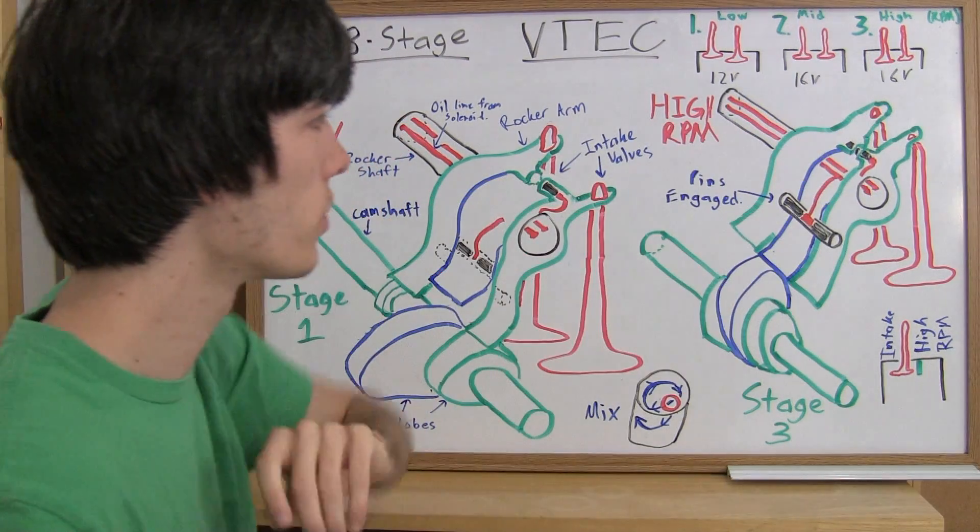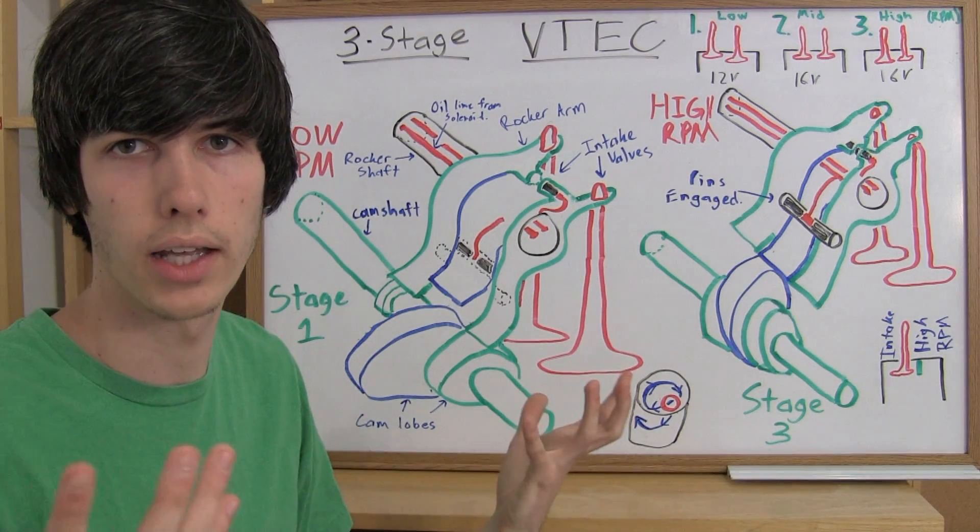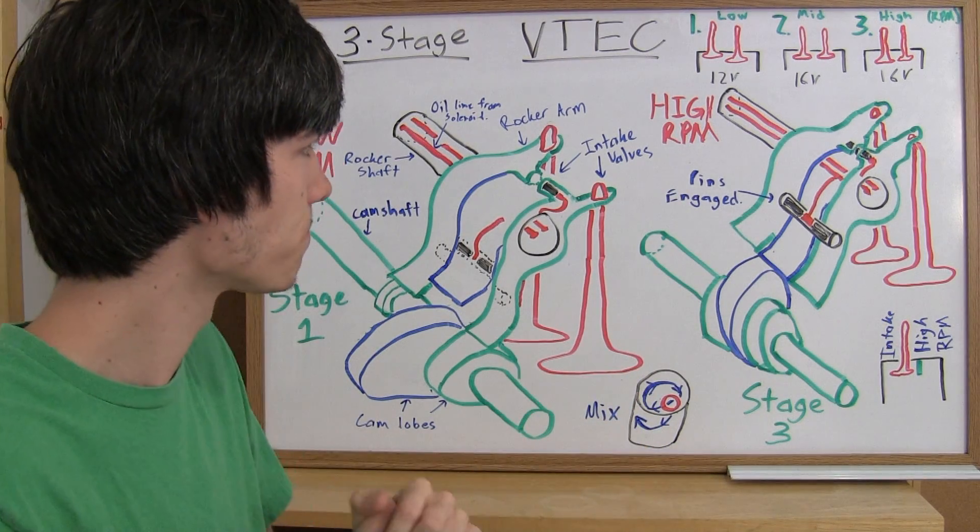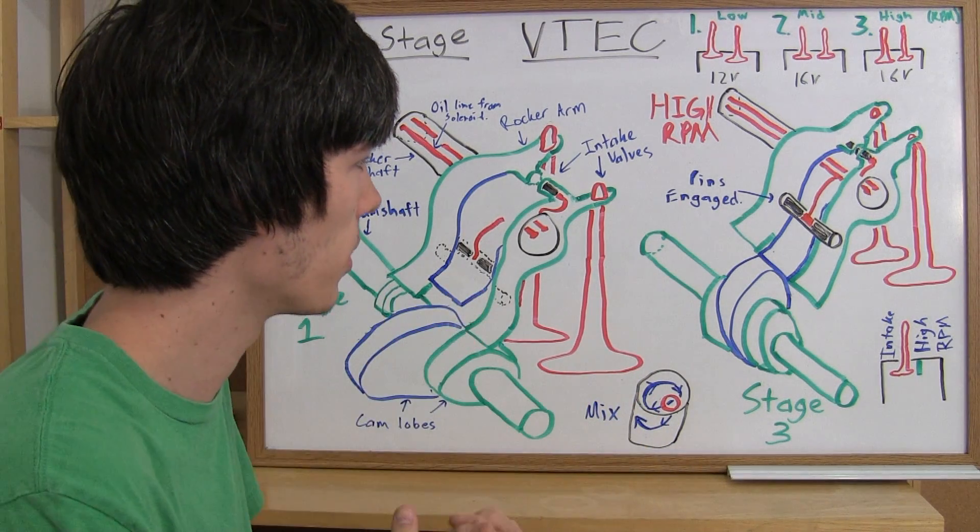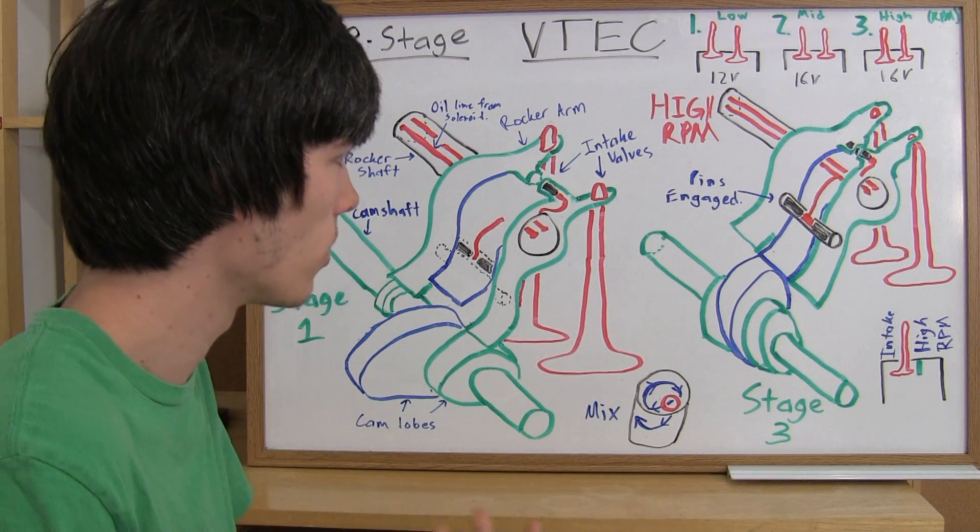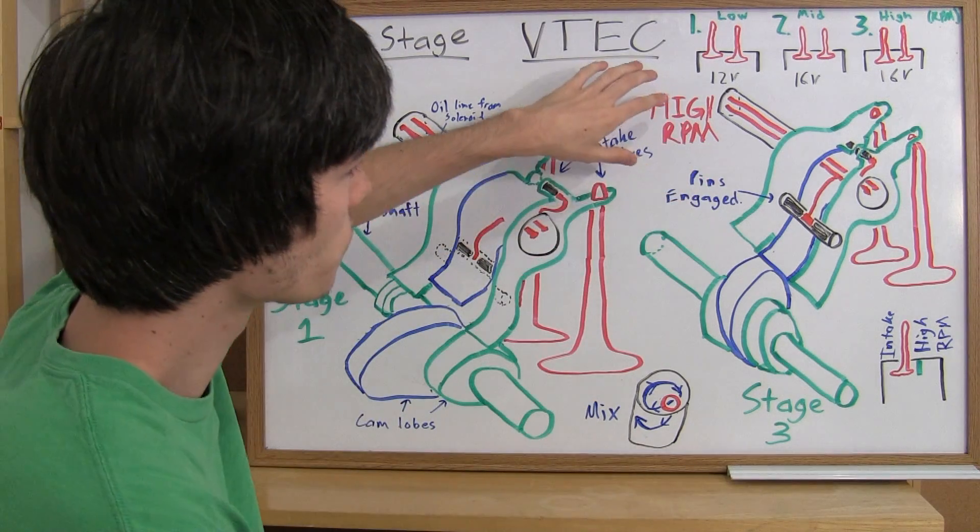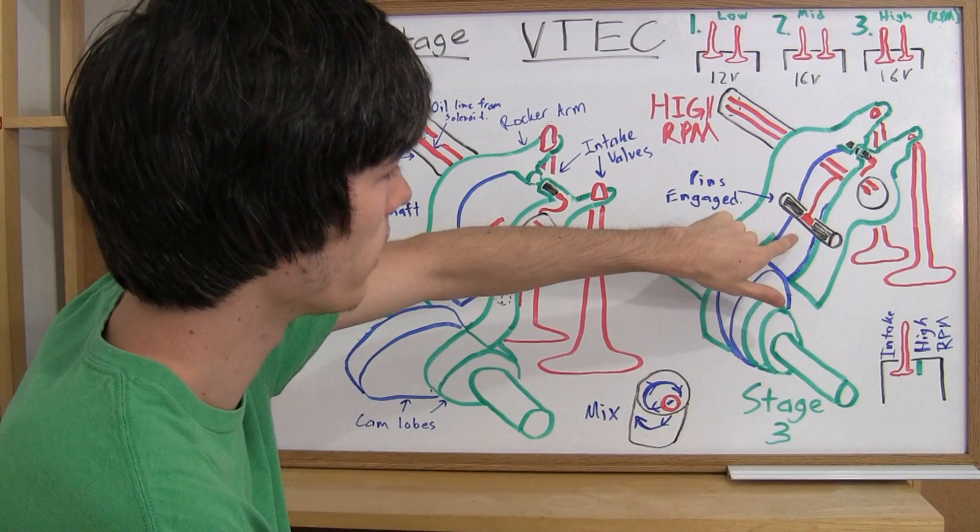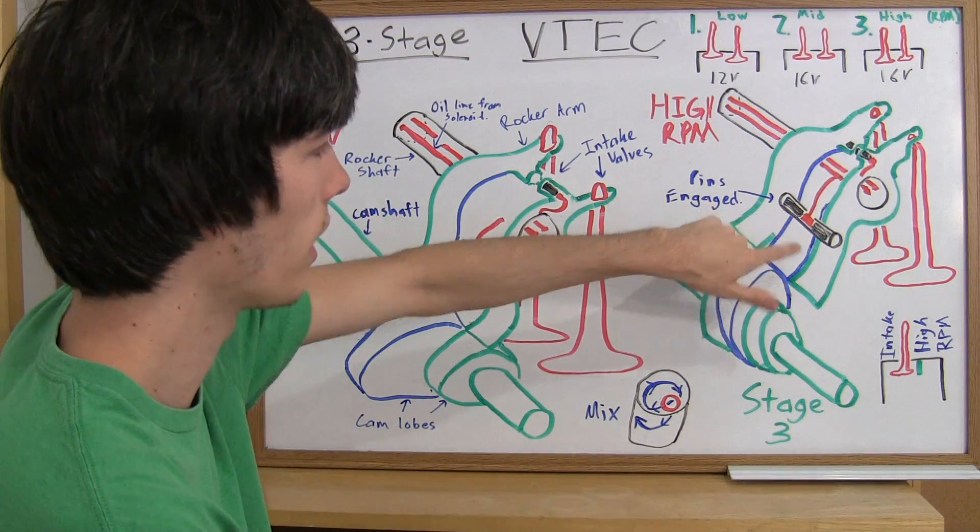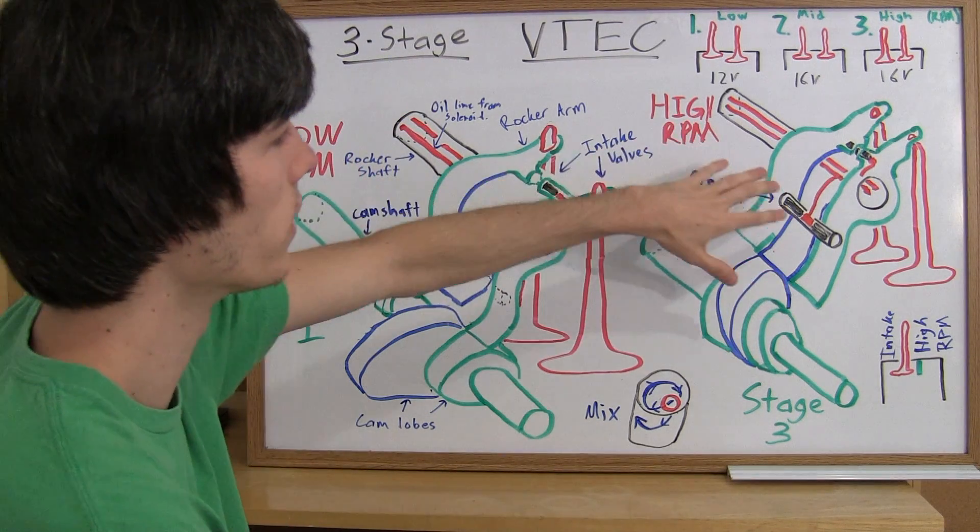And so once you get to the high range is when you can activate and you want to get more power. You don't really care about efficiency if you're revving at 7,000 RPMs. So what this does is it activates the lower pin set just like in traditional VTEC.